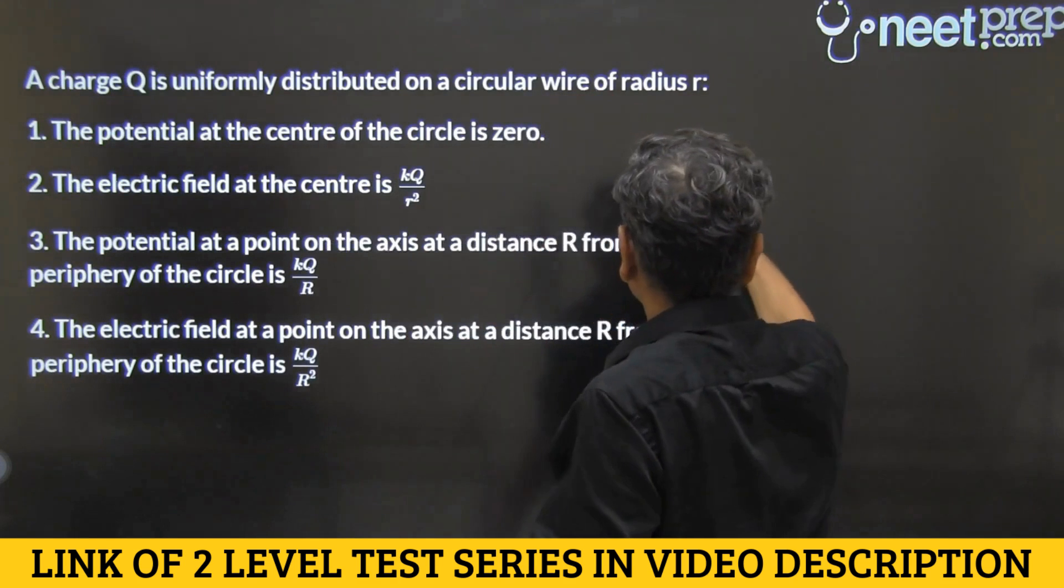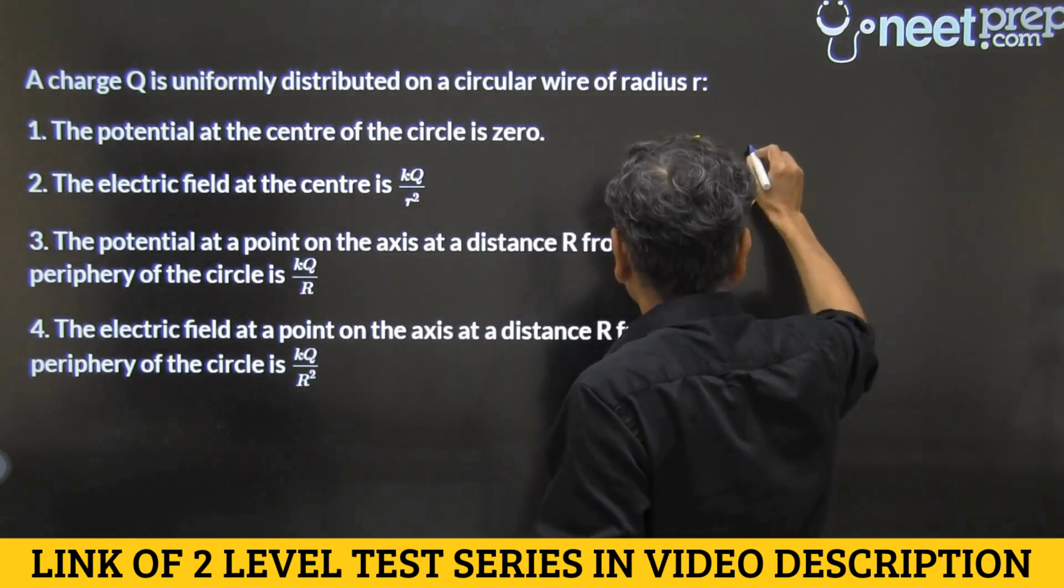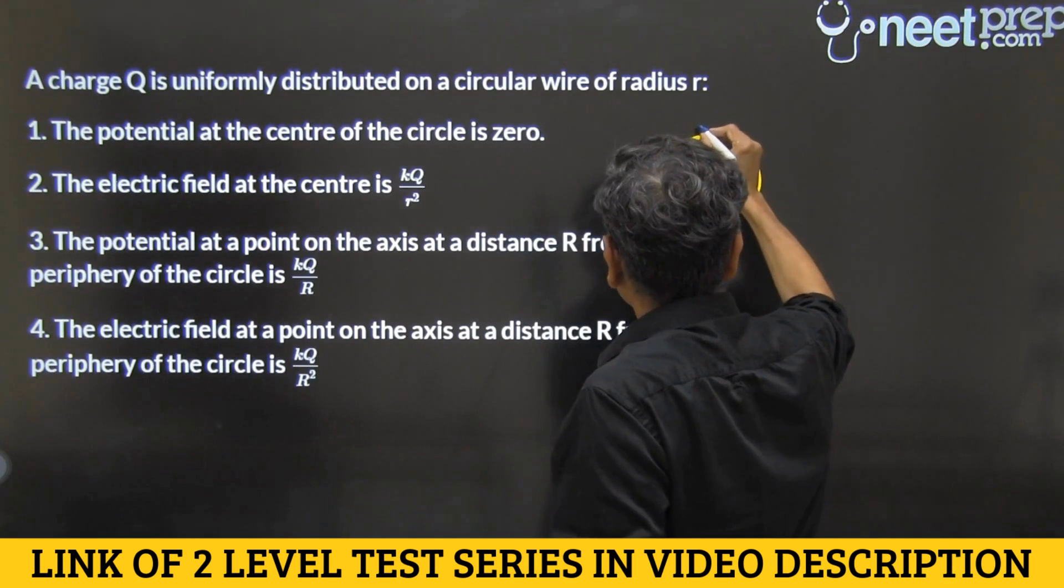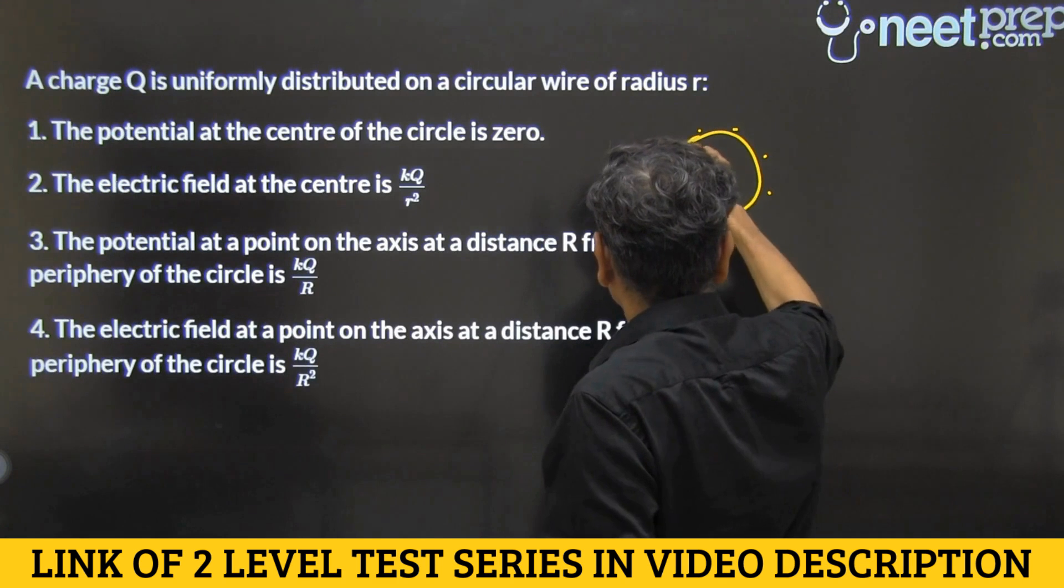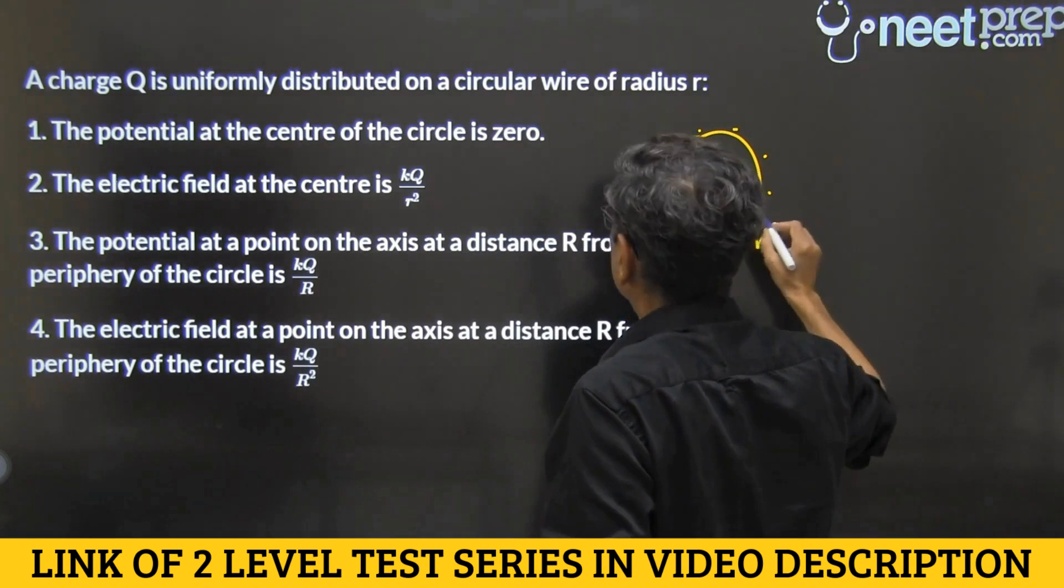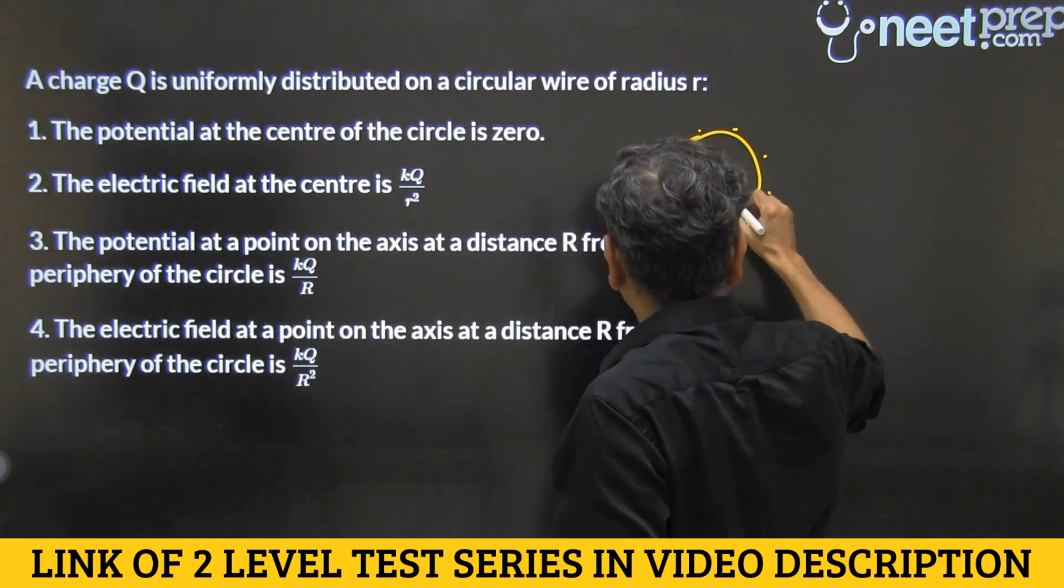So let me draw a representative diagram. All over, uniformly, some charge Q is distributed. And the radius is R.